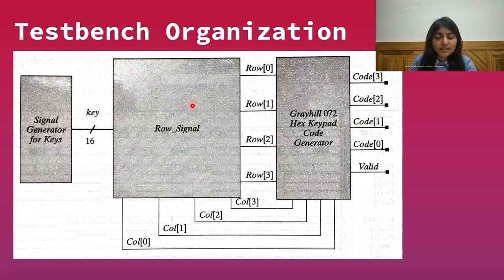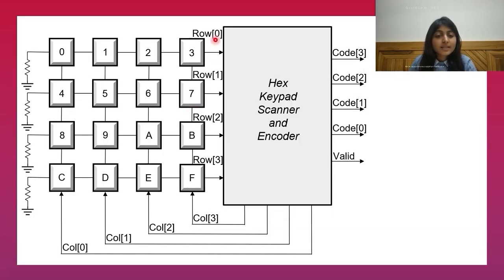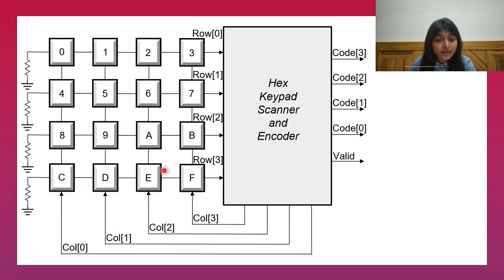Let us understand the row signal module. Its function is to assert the row lines corresponding to a pressed key. For example, the row 0 line will be high when button 0 is pressed and column 0 is high, when button 1 is pressed and column 1 is high, when button 2 is pressed and column 2 is high, or when button 3 is pressed and column 3 is high. Similarly, the row 3 line will be high when button C is pressed and column 0 is high, and so on.